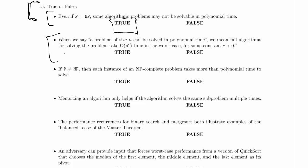When we say a problem of size n can be solved in polynomial time, we mean all algorithms for solving the problem take O(n^c) time in the worst case for some constant c greater than 0. Well, O(n^c) for some constant c greater than 0 is a nice definition of polynomial time, and we are talking about worst case time.